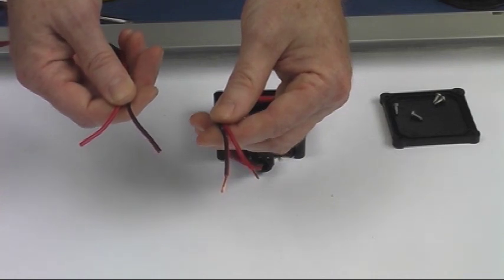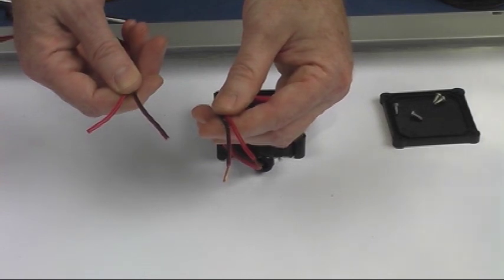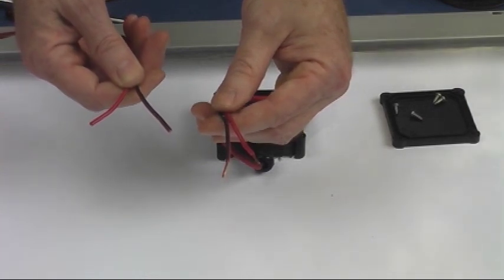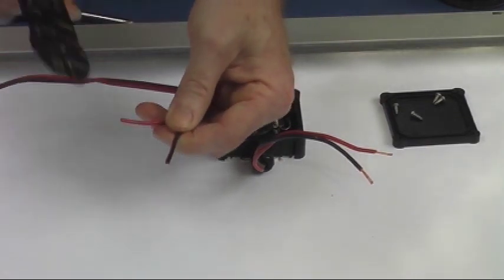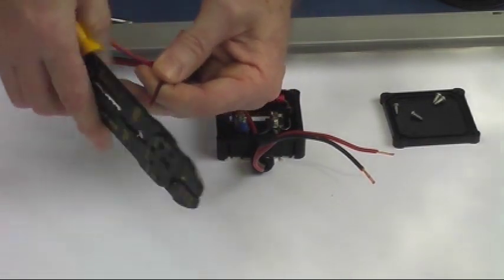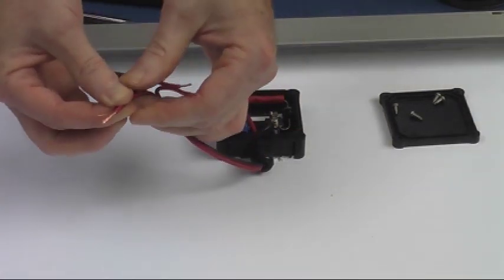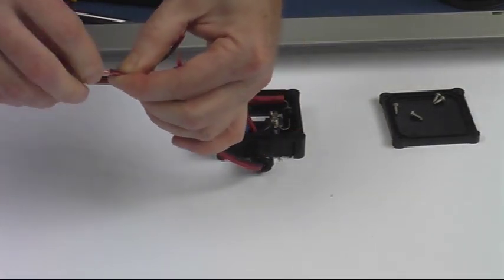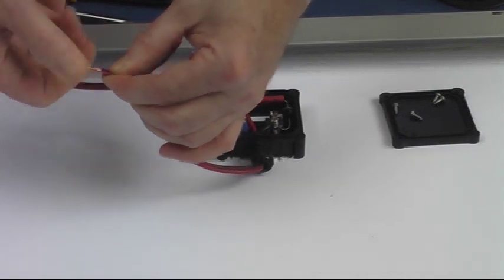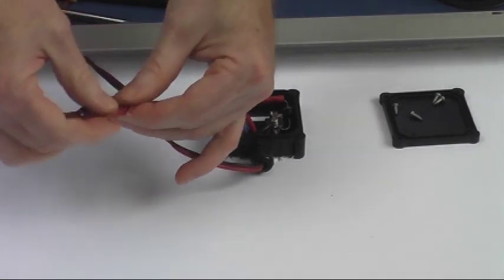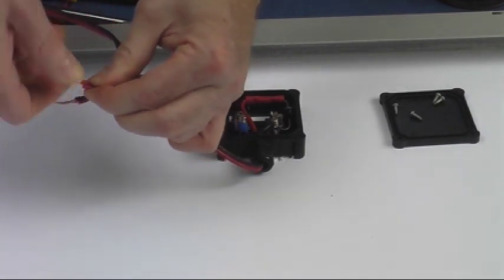Now we're going to strip the ends on the wires that we just brought over to this box and we're going to tie the reds together and we're going to tie the blacks together. You tie the two reds together and you tie the two blacks together.